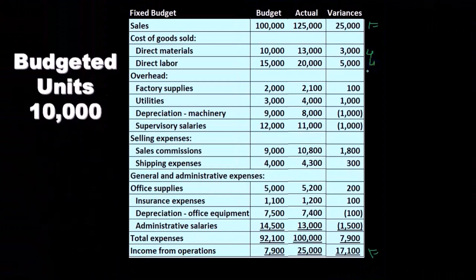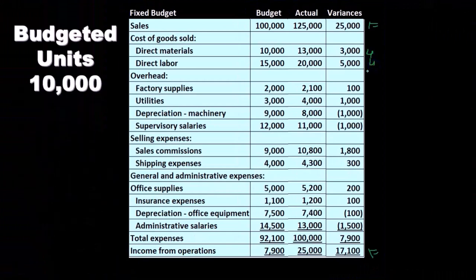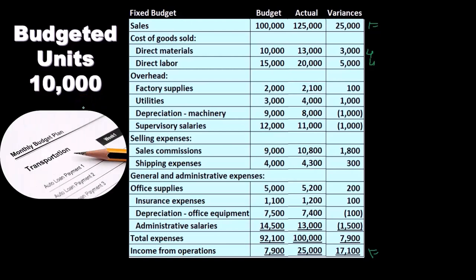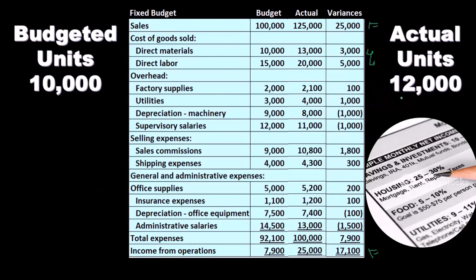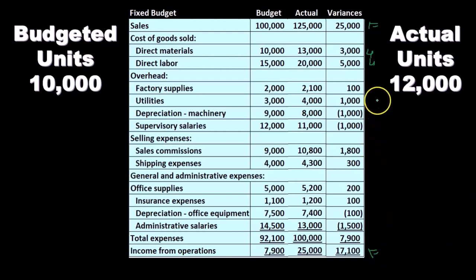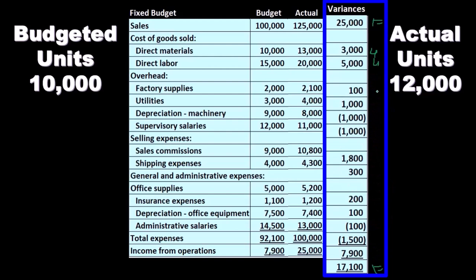That is what we would expect if we had a situation where the budget was based on a lower number of units — 10,000 in this case — versus the actual number that was actually produced, 12,000. That means that although we have a favorable difference in terms of sales and net income and an unfavorable difference in terms of the expenses, that is what we would expect given the higher production level, which is in essence a good thing.